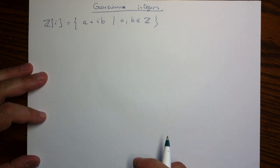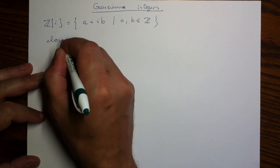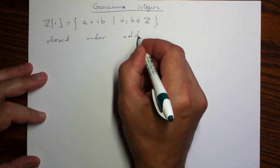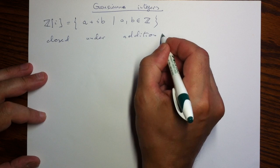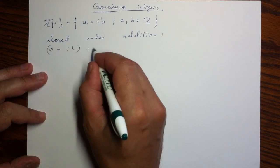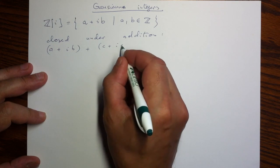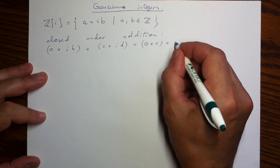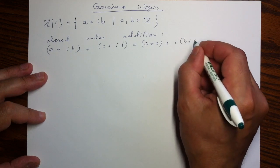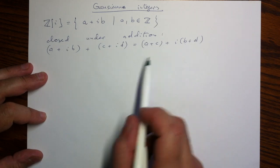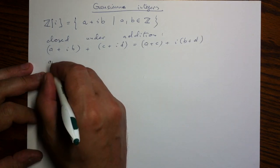From the definition of operations on complex numbers, we can see that this is closed under addition. Adding two complex numbers, what we are supposed to do is to add the real parts and to add the imaginary parts. And of course, if A, B and C and D are all integers, the results will be integers.